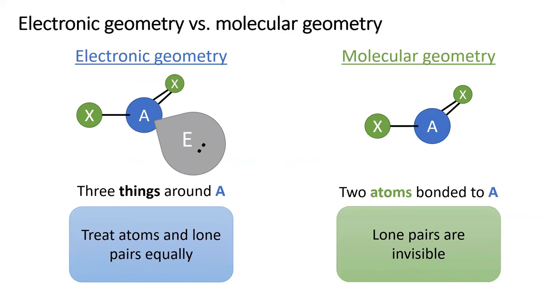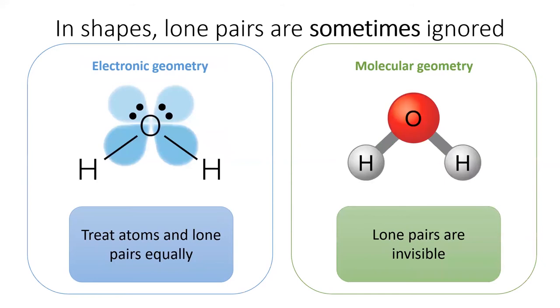In the molecular geometry, we pretend that the lone pairs are invisible. Of course, they are still there and they still take up space, but they're colored white on a white background and we only pay attention to the orientation of the atoms. The molecular geometry is by far the most common. Using water as an example, the view on the left shows the electronic geometry including lone pairs. But you are probably much more used to seeing water drawn as it is on the right. The lone pairs are still there. We just can't see them.